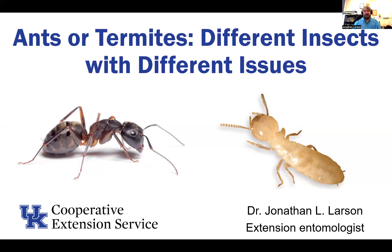Good afternoon everybody. My name is Jonathan Larson. I'm an extension entomologist for UK. Today I was asked to talk with you about two insects that are making their springtime appearance here in Kentucky. We're going to talk about the differences between ants and termites. These are very different insects — often conflated together, but they present different issues to people, and I wanted to show the differences because they are pretty unique organisms.